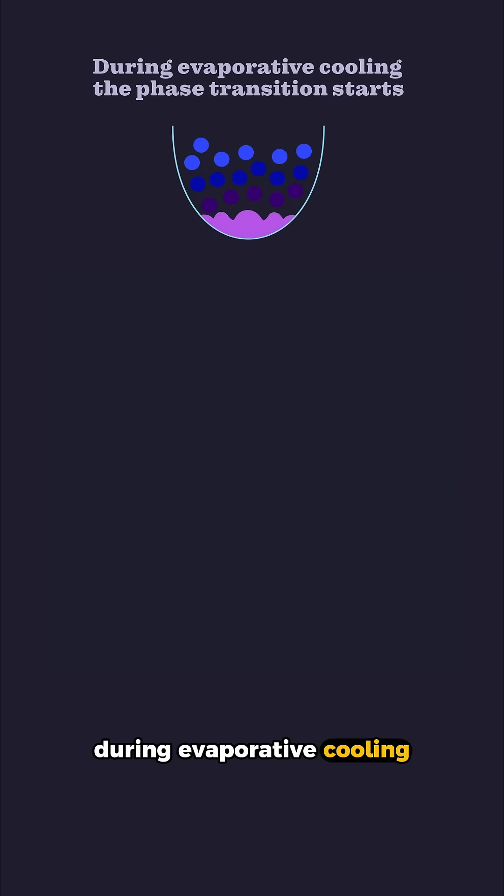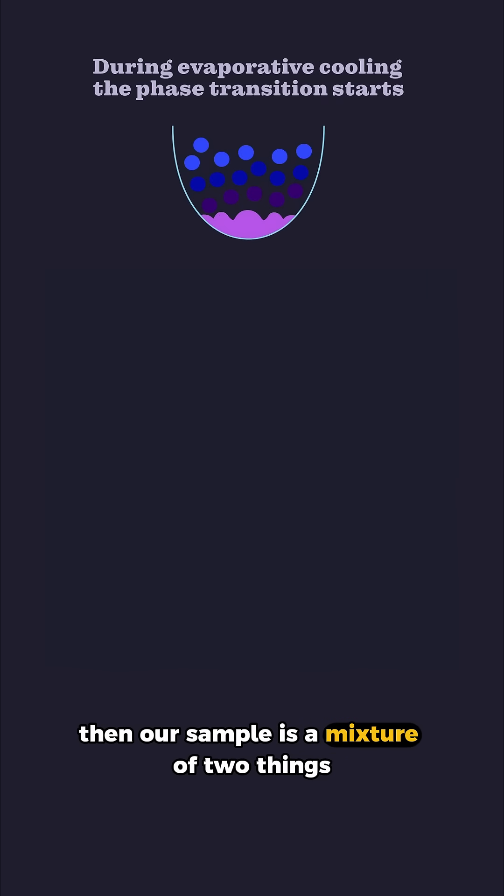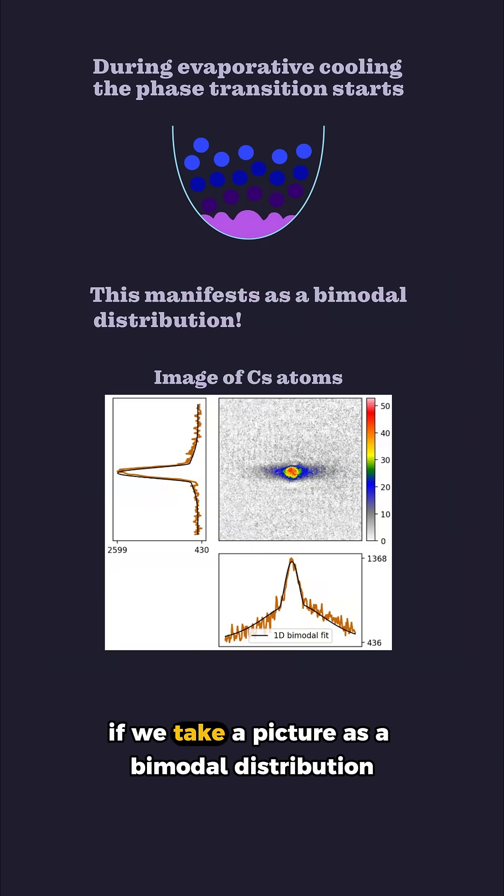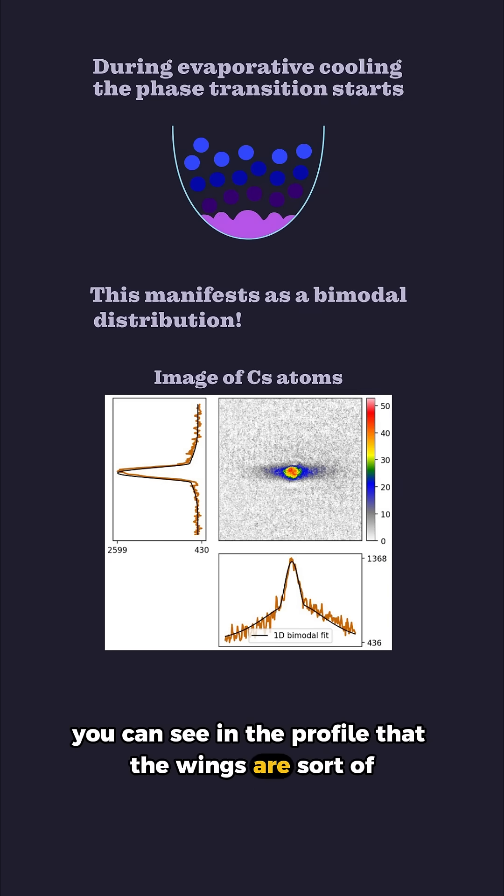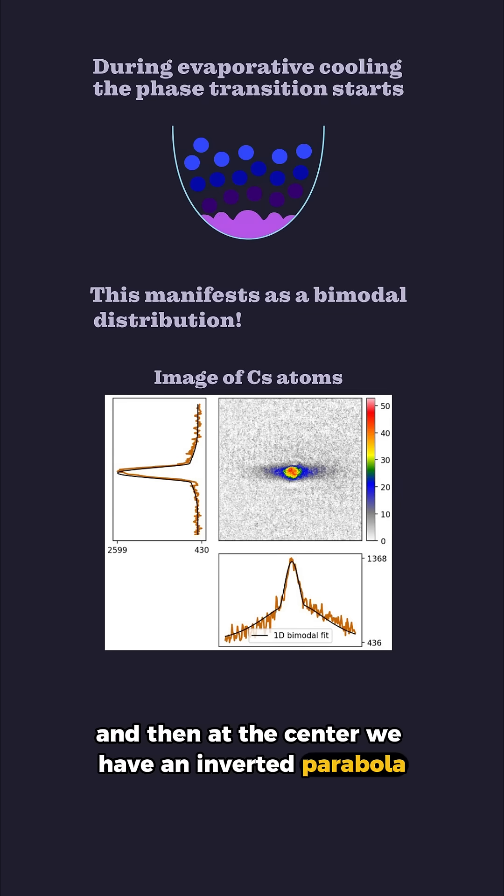During evaporative cooling then our sample is a mixture of two things. The first component is the atoms that already underwent the phase transition, shown here in purple, and the thermal atoms, shown in blue. And this manifests, if we take a picture, as a bimodal distribution. Here you can see in the profile that the wings are sort of a Gaussian shape, and then at the center we have an inverted parabola.